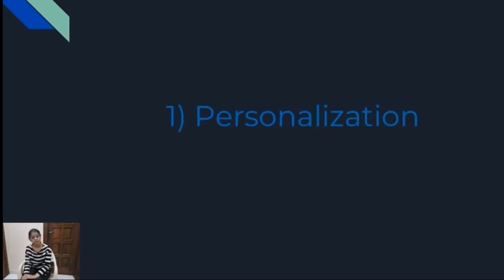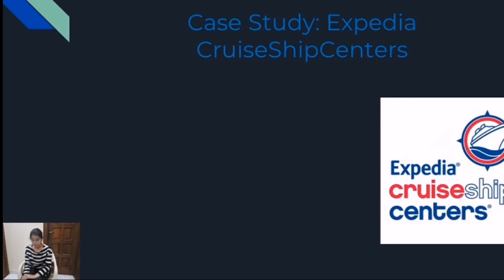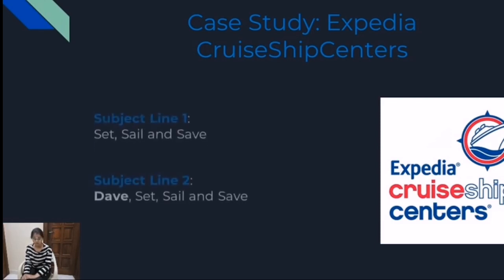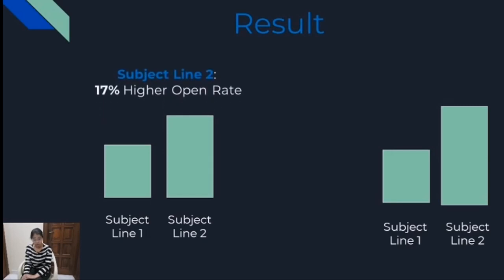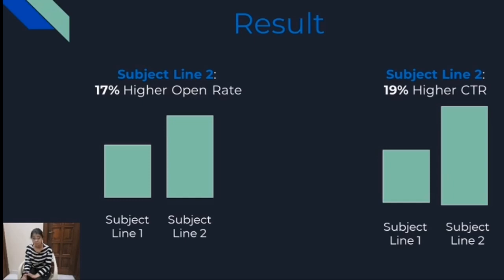The first thing that is very important is personalization. You can add personalization in your subject line. I will present a case from Expedia, because they had A/B testing for one email with two different subject lines — the message was the same. One had personalization and the other did not. Subject line one was: 'Get, Sale and Save.' Subject line two was: 'Dave, Get, Sale and Save' — using the first name of the subscriber and then the message. Obviously, the result came, and the winner was subject line two, which generated a 17% higher open rate compared to subject line one, and eventually their CTR was 19% higher. After that, this was a major insight for them and they have been trying to personalize their subject lines as much as possible.